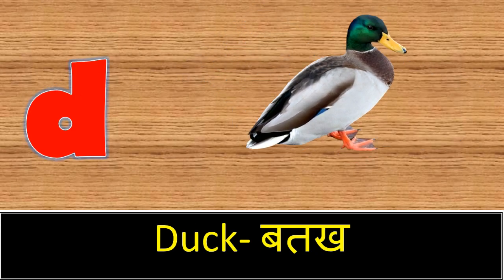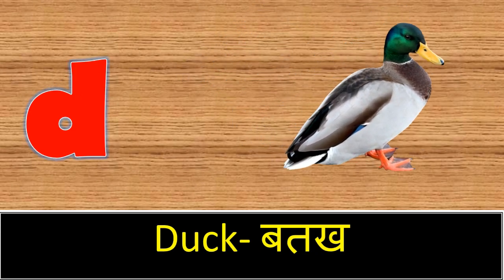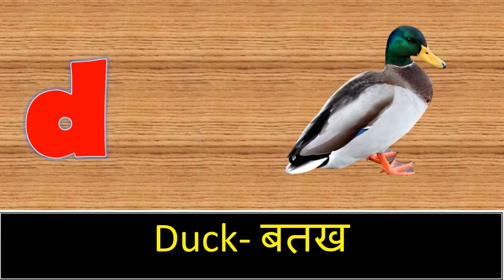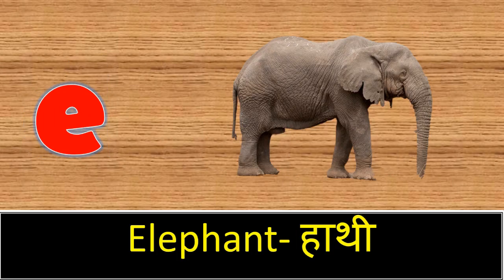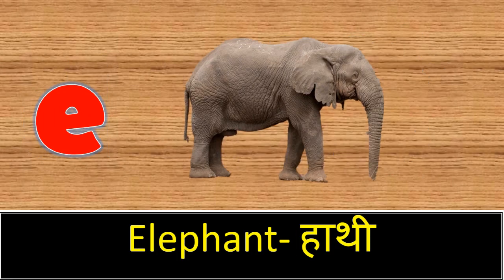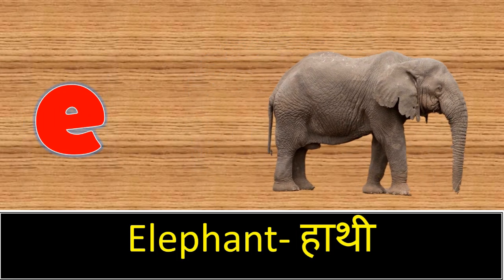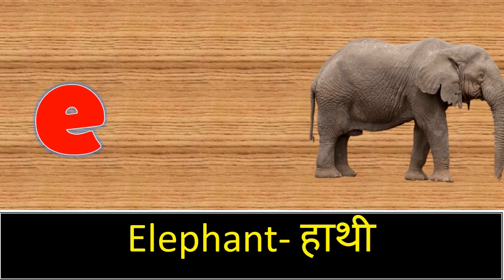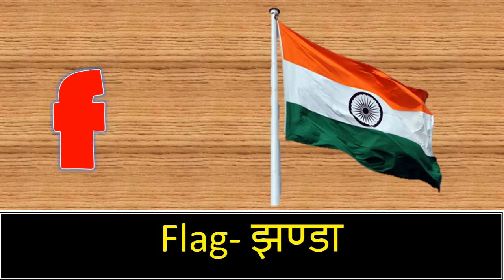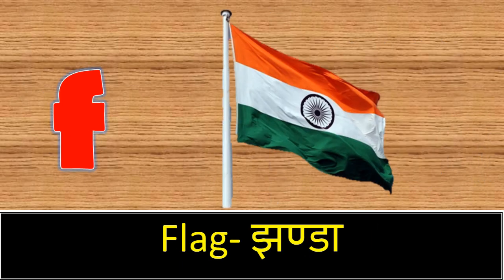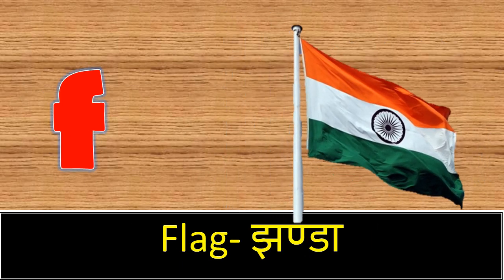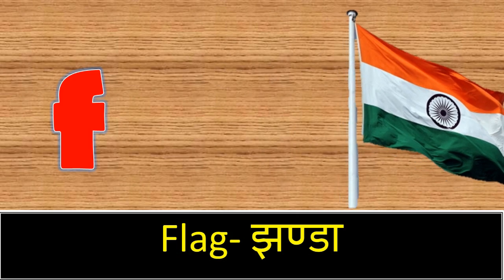D. D for duck. Duck means buttock. E. E for elephant. Elephant means haathi. F. F for flag. Flag means chanda.